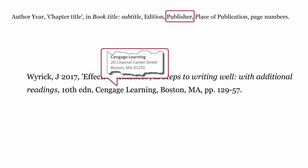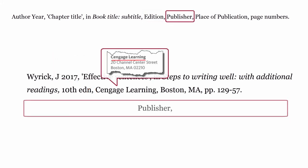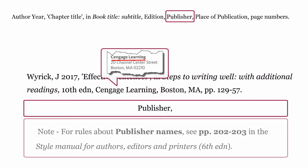Publisher: this is who published the book. The publisher is formatted using the publisher's name, then a comma. For rules about publisher names, see pages 202 to 203 of the Style Manual for Authors, Editors, and Printers, 6th edition.